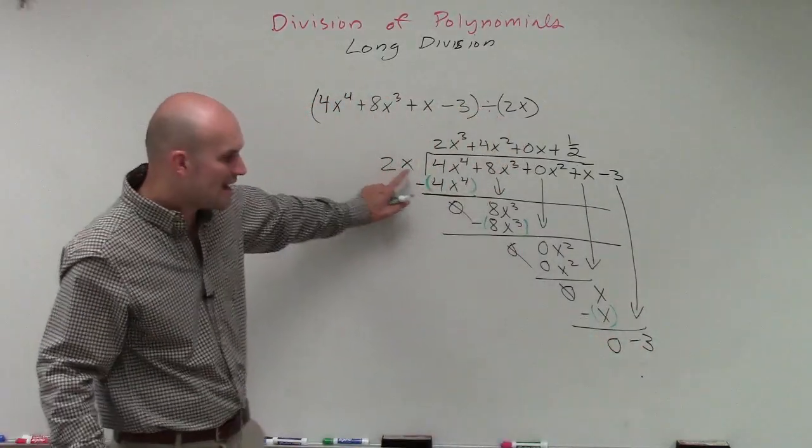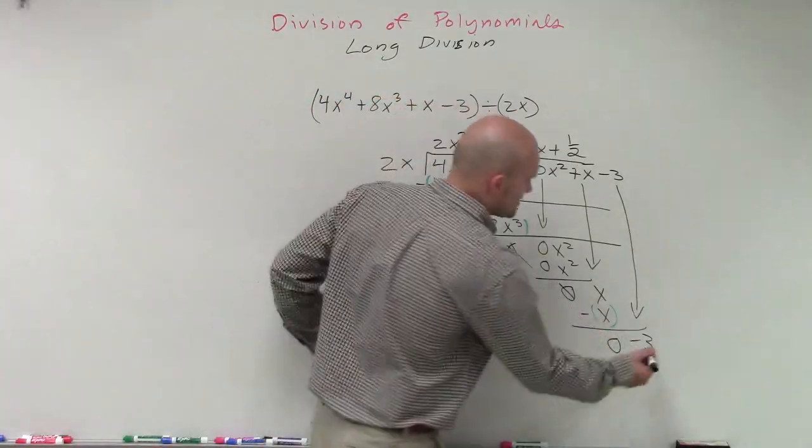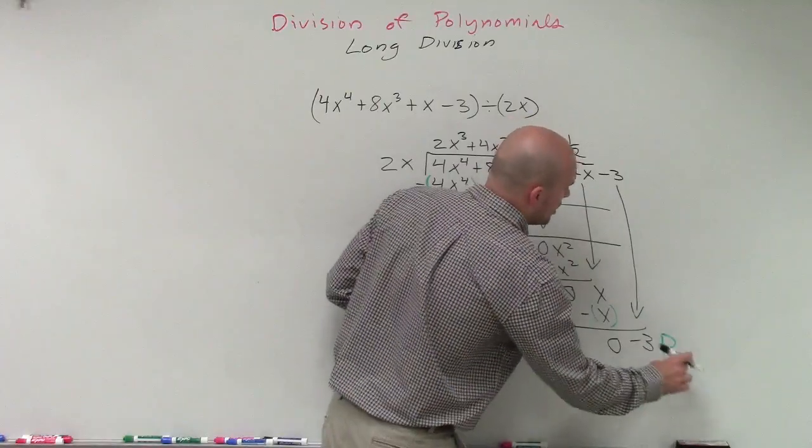Now, notice this 2x has a variable factor with it. That's not going to divide into a constant. So therefore, this negative 3 is going to be what we call our remainder.